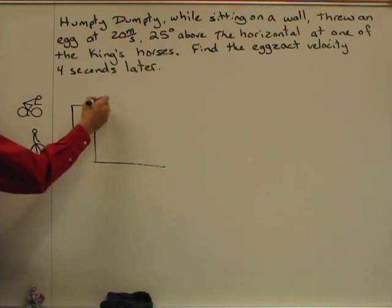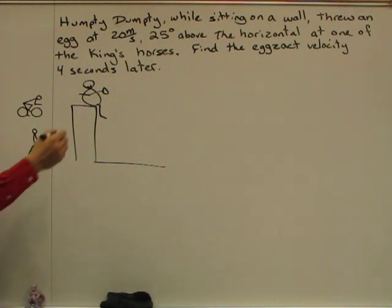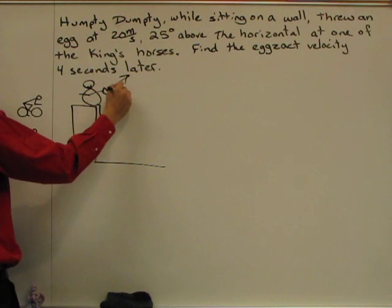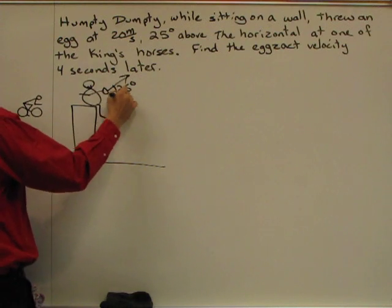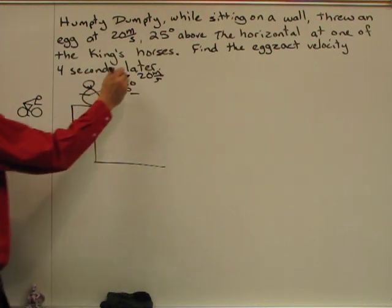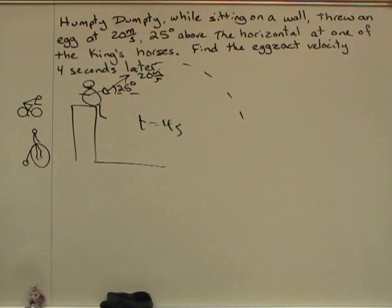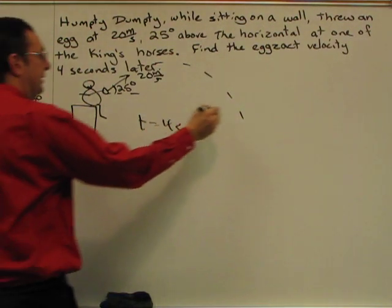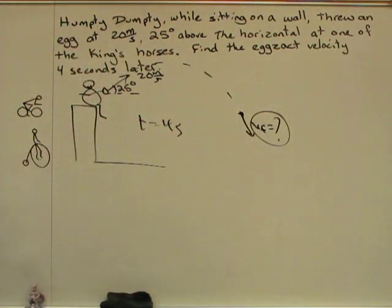There's the wall. He then is sitting on the wall, and takes an egg, which is right there in his hand, and throws it in this direction, 25 degrees above the horizontal, and the initial velocity of 20 meters per second. It then goes up, comes back down, time is four seconds. At that later point here, that final velocity is the unknown.